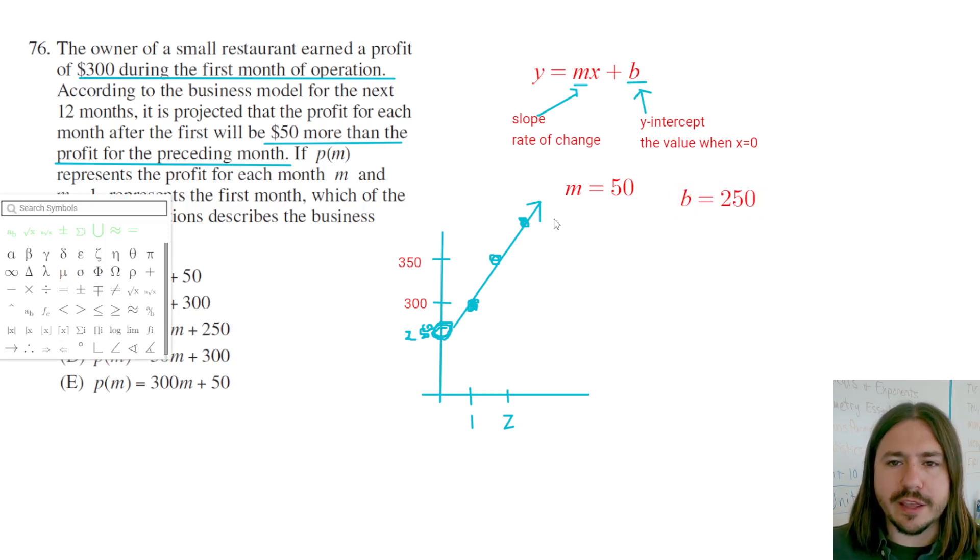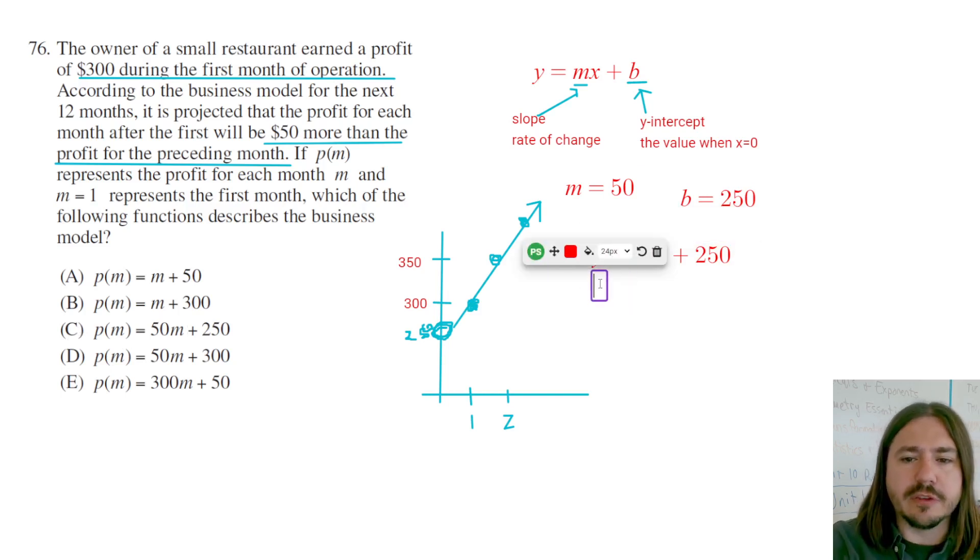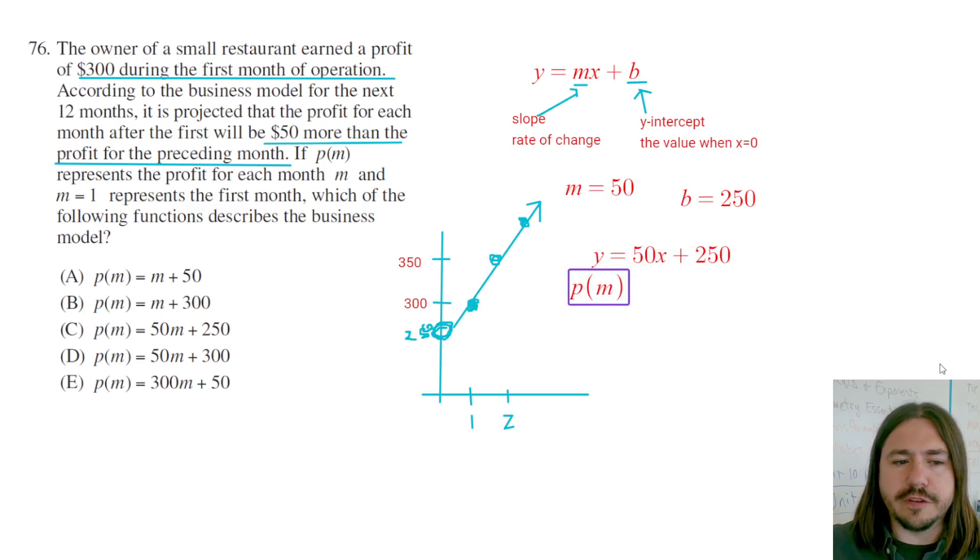If we're just writing it in this format, y equals mx plus b would be y equals 50x plus 250, but we're going to use function notation and use the variables they are requesting here, which is p and m. So we've got P of m, that's not p times m, that's just the function notation for p in terms of m, should equal 50 times the number of months plus 250.